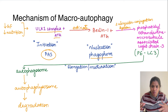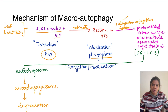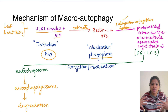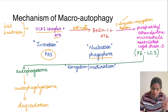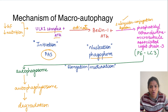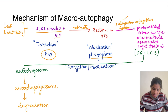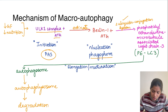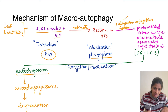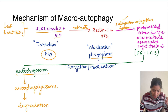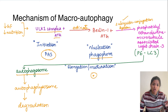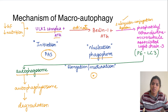Beclin-1, with the help of two ubiquitin-like proteins, leads to the covalent linking of phosphatidylethanolamine (PE) with microtubule-associated light chain protein 3 (LC3) — just remember it as PE-LC3. This PE-LC3 is responsible for the formation of the autophagosome, which is the elongation and maturation step where the vesicle closes around the target organelle. The autophagosome then fuses with the lysosome to form the autophagolysosome, and the organelle gets degraded inside.